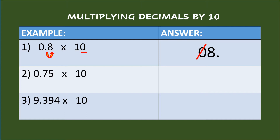In Example 2: 75 hundredths times 10. Since the multiplier 10 has only one zero, move the decimal point in the multiplicand one place to the right and put the decimal point between 7 and 5. So the answer is 7 and 5 tenths. You may omit the zero at the beginning of decimals since it has no value.